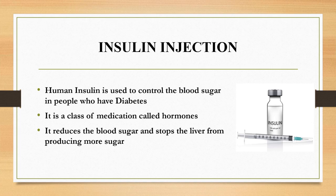There are three reasons which lead to diabetes. The first reason is the body cannot produce any insulin. The second reason is the insulin produced by the body is not effective. The third reason is the body produces insulin but that is not sufficient to control the blood sugar.